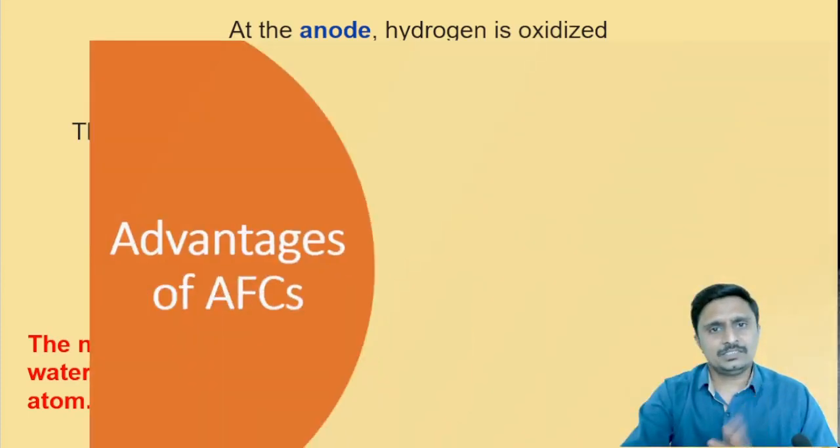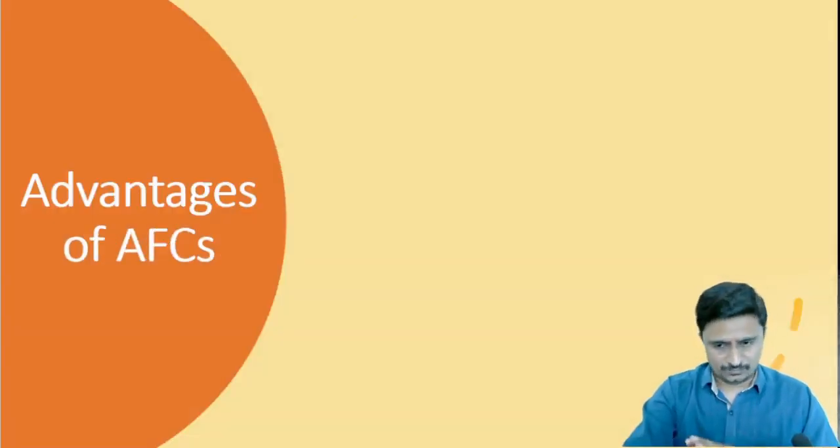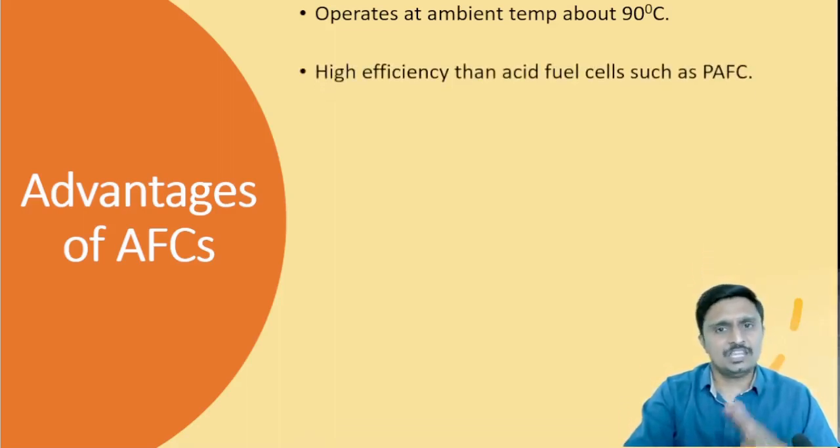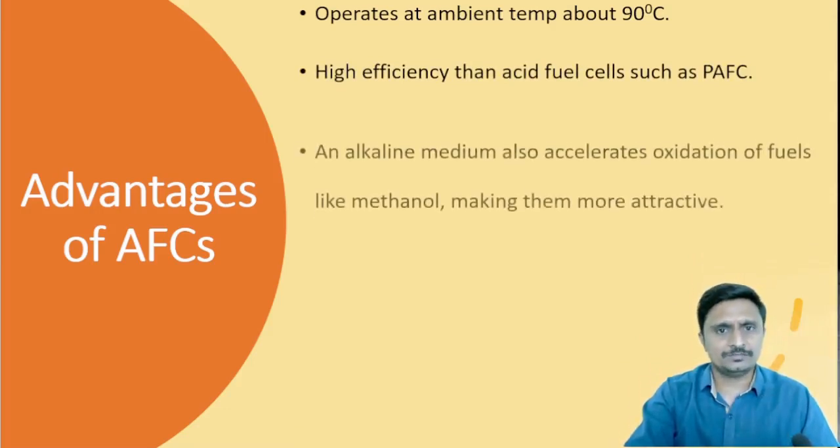Now, we will see what are the advantages. There are different advantages of this alkaline fuel cell. This fuel cell operates at ambient temperature, means minimum temperature. If you see the PAFC that operates at about 120 to 130 degree Celsius temperature, this operates at the minimum temperature. Then it has high efficiency as compared to acid fuel cells.